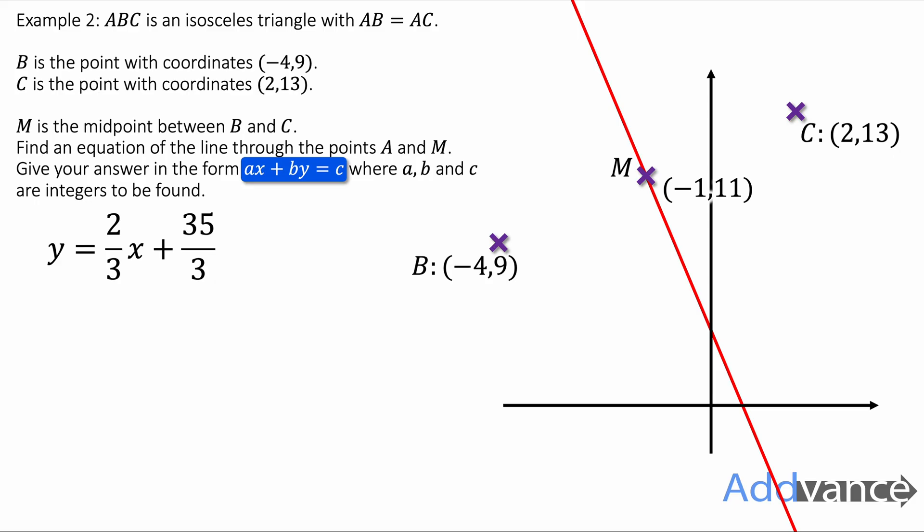But we wanted the equation in the form ax + by = c. That means all the x's and y's need to be on the same side. And the coefficient of y and x must be a whole number, must be an integer. We'll start by multiplying everything by 3. This gets rid of fractions so we've got integers. We've multiplied everything by 3 and that's got rid of the denominators of 3. We'll now move the x's to the other side: -2x + 3y = 35. And that is the final answer. We've got it in the form that the question asked for.